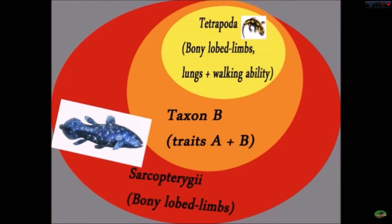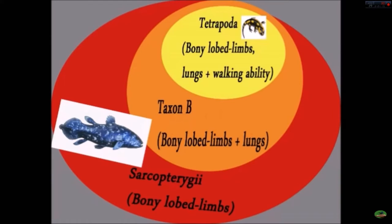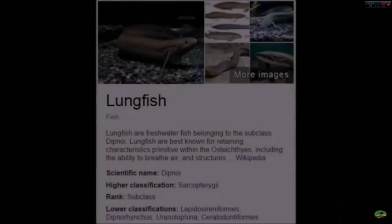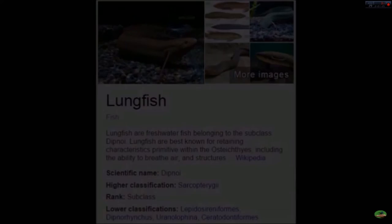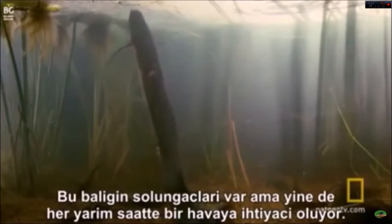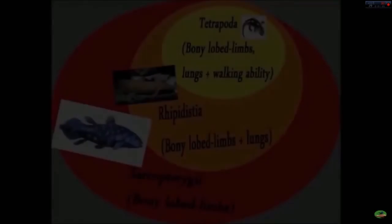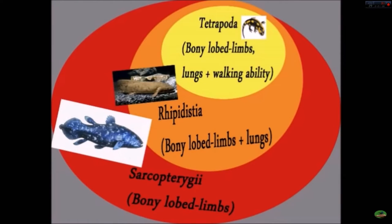Thus, we come to our testable definition for a transition — taxon B — that should fall between water-dwelling sarcopterygians and the land-dwelling tetrapods. The definition follows as: accorded with the calcified lobe-limbed skeletal structure and lungs, but does not have the limb structure necessary to walk like true tetrapods. Lo and behold, there are actually a few creatures that we know of that fit this definition, usually within the lungfish taxon. We can see that most lungfish species rely on their lungs to respire, yet they're all relegated to the marine environment, lacking the limbs necessary to carry their own weight on land.